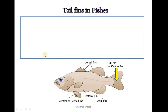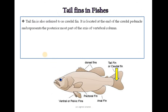Let us begin with what is a tail fin in fish. The tail fin is also referred to as the caudal fin. It is located at the end of the caudal peduncle and represents the posterior-most part of the axis of the vertebral column. Here in the diagram, you can see the fish body is clearly divided into head, trunk, and tail region, and at the tail region the tail fin is present, which is called the caudal fin.